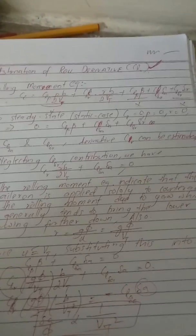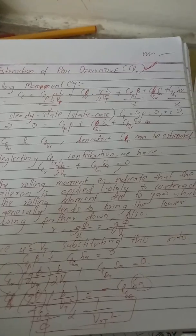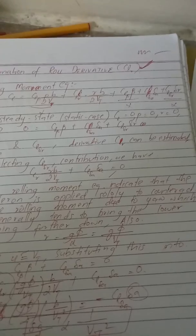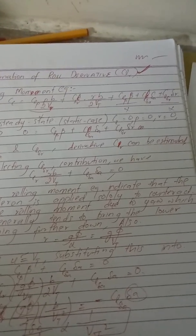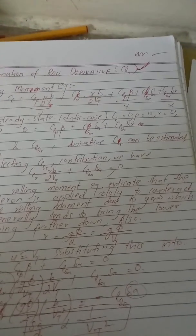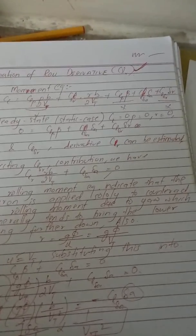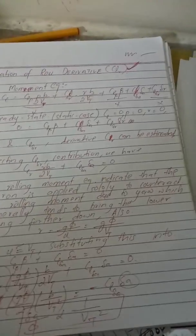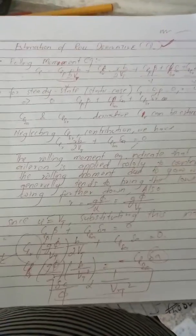We are going to find out the roll derivative due to the aileron. The aileron is located at the back end of both wings, on the far outboard side. The aileron normally creates the rolling moment, and we have to find the rolling derivative, or the roll derivative.